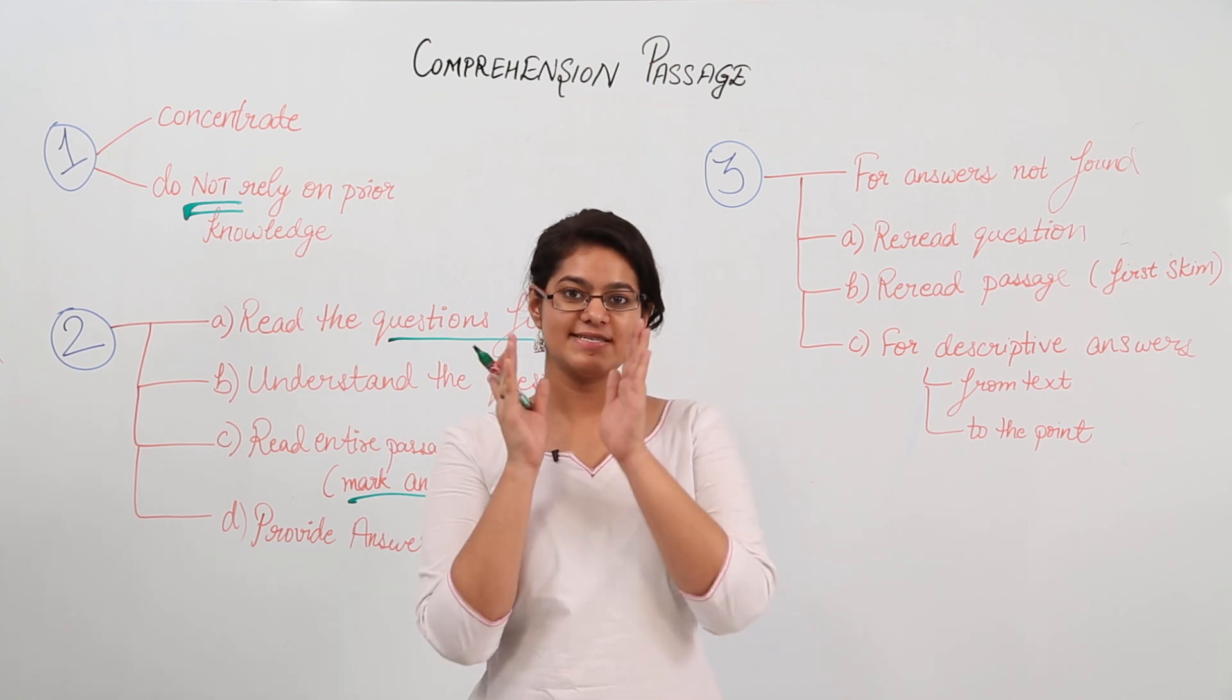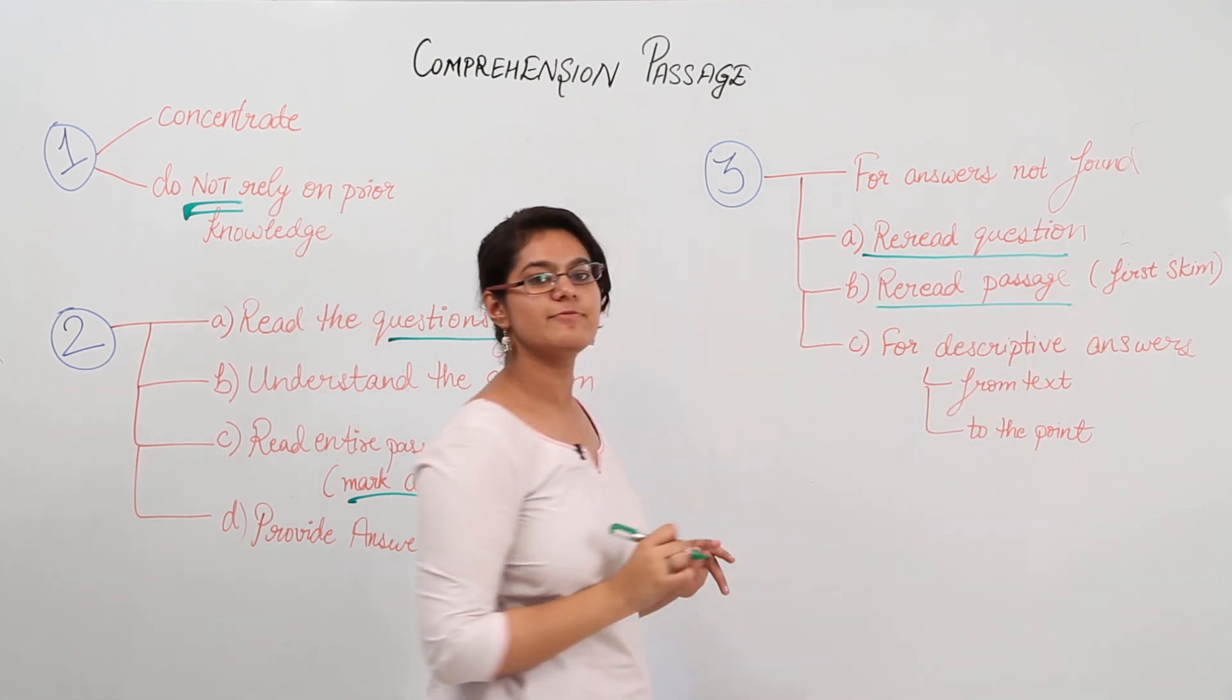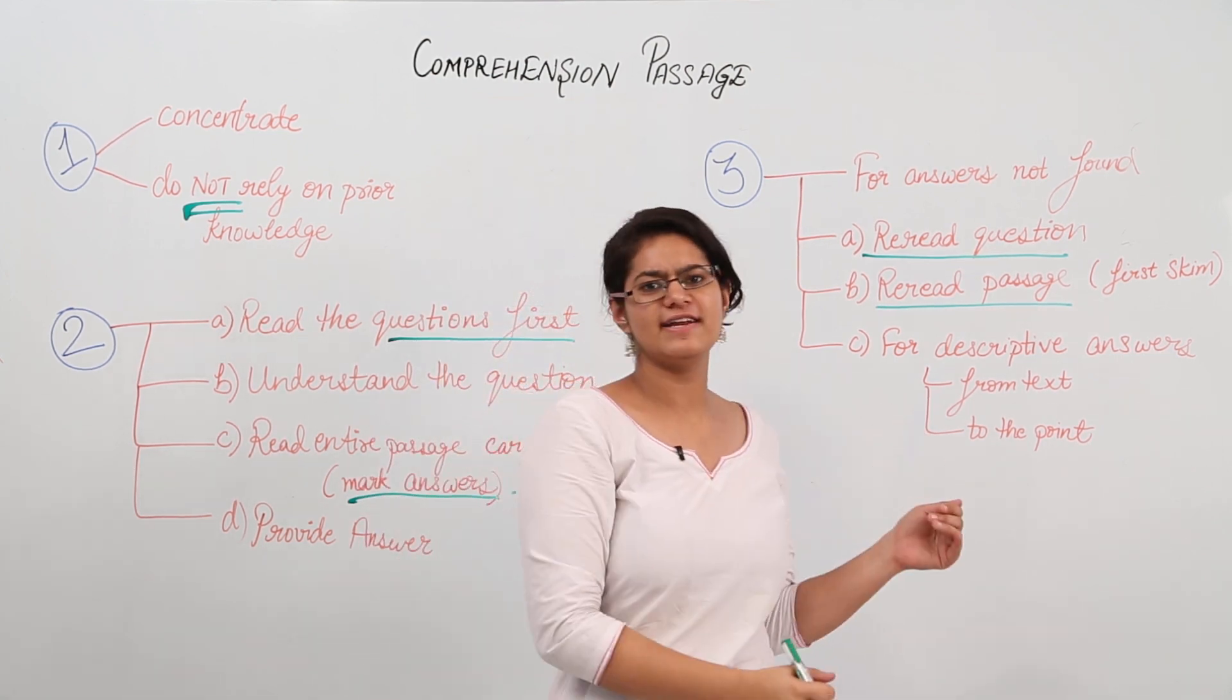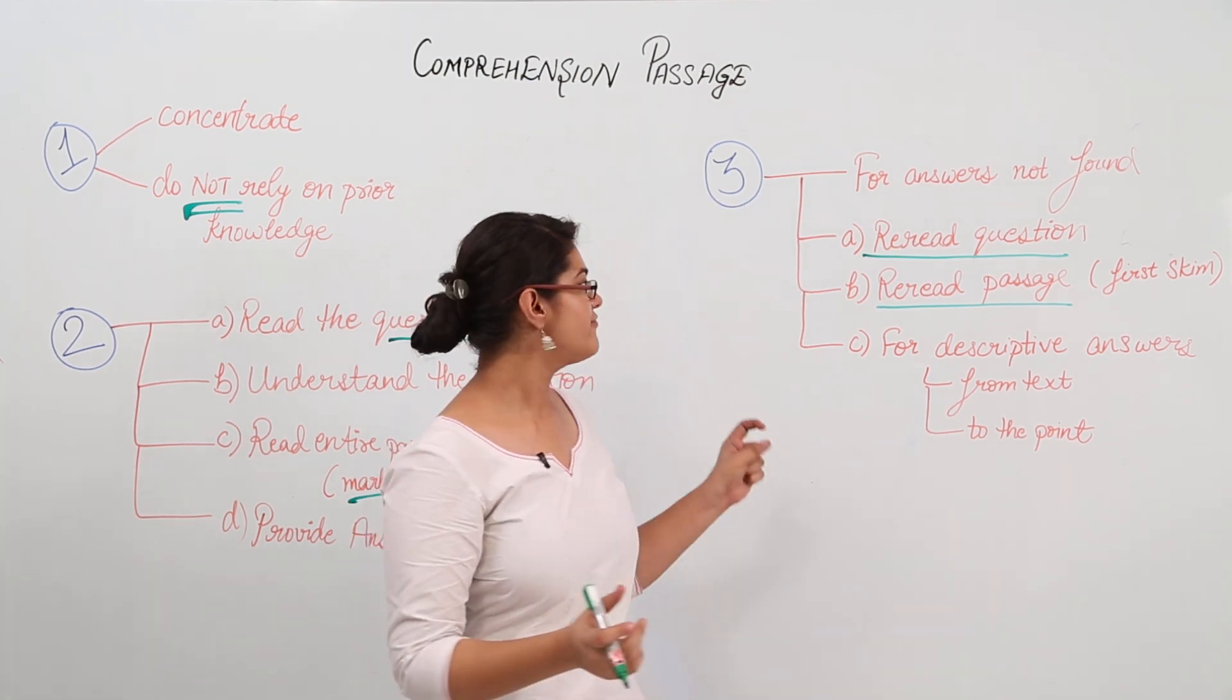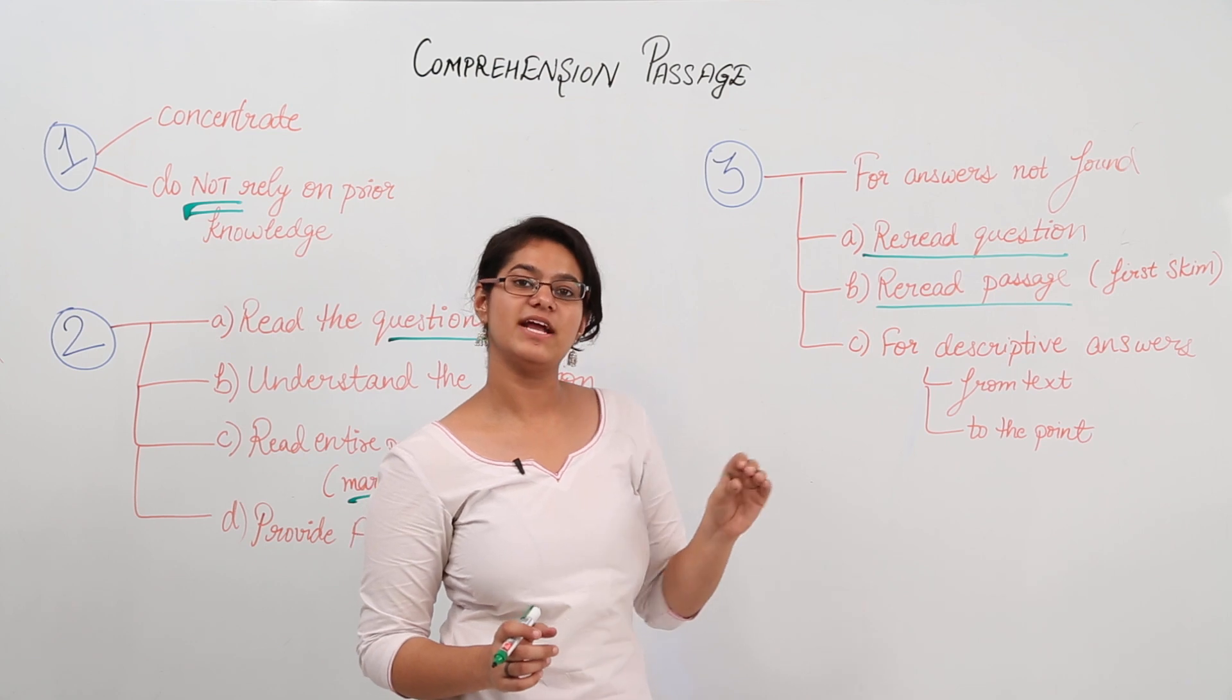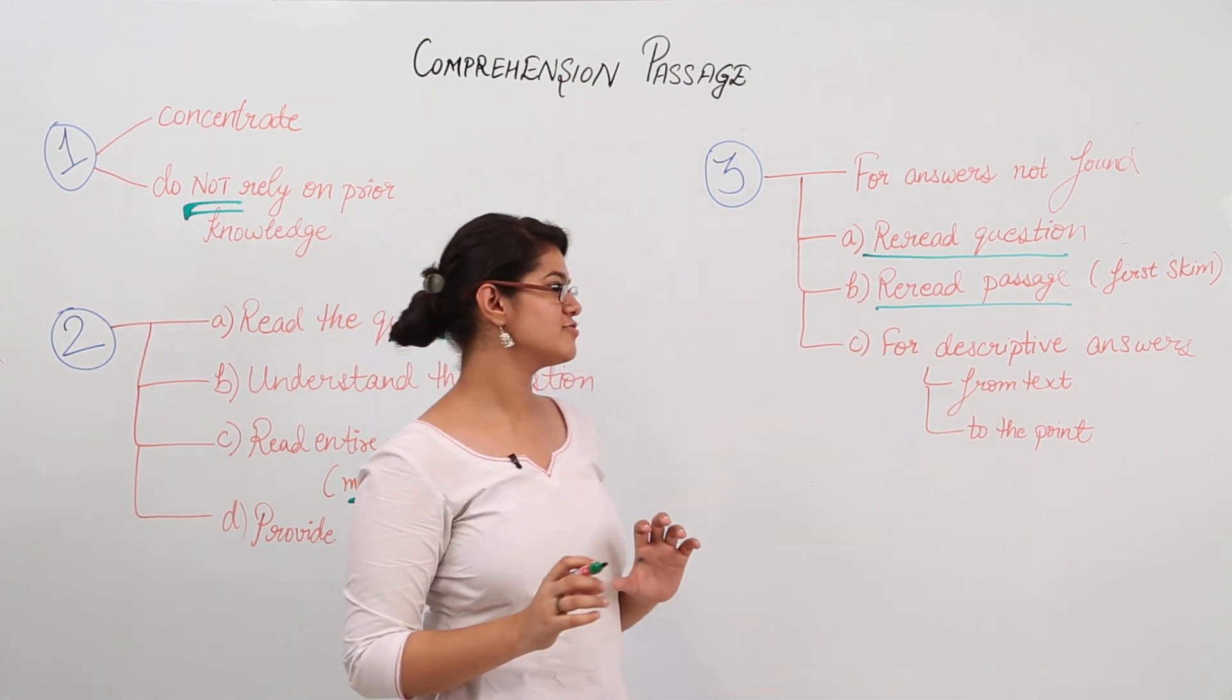Understand what exactly they are wanting, and after that, reread the passage. Now, how to reread the passage? First, skim over it. Go to the paragraph where you think the answer might be found. Because you've already read the passage once, you understand its contents. So first, skim it. Understand in which paragraph the answer might be available and read that. If you do not find it then, reread the entire passage with concentration.